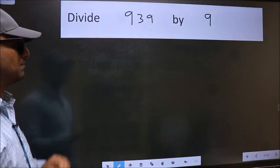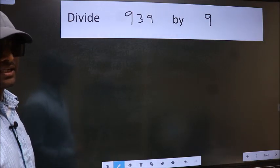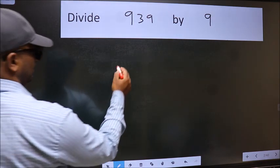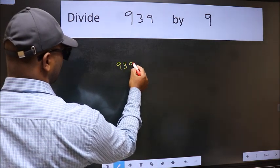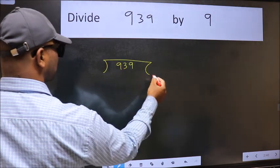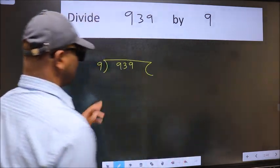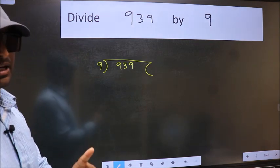Divide 9.39 by 9. To do this division, we should frame it in this way. 9.39 here and 9 here. This is your step 1.